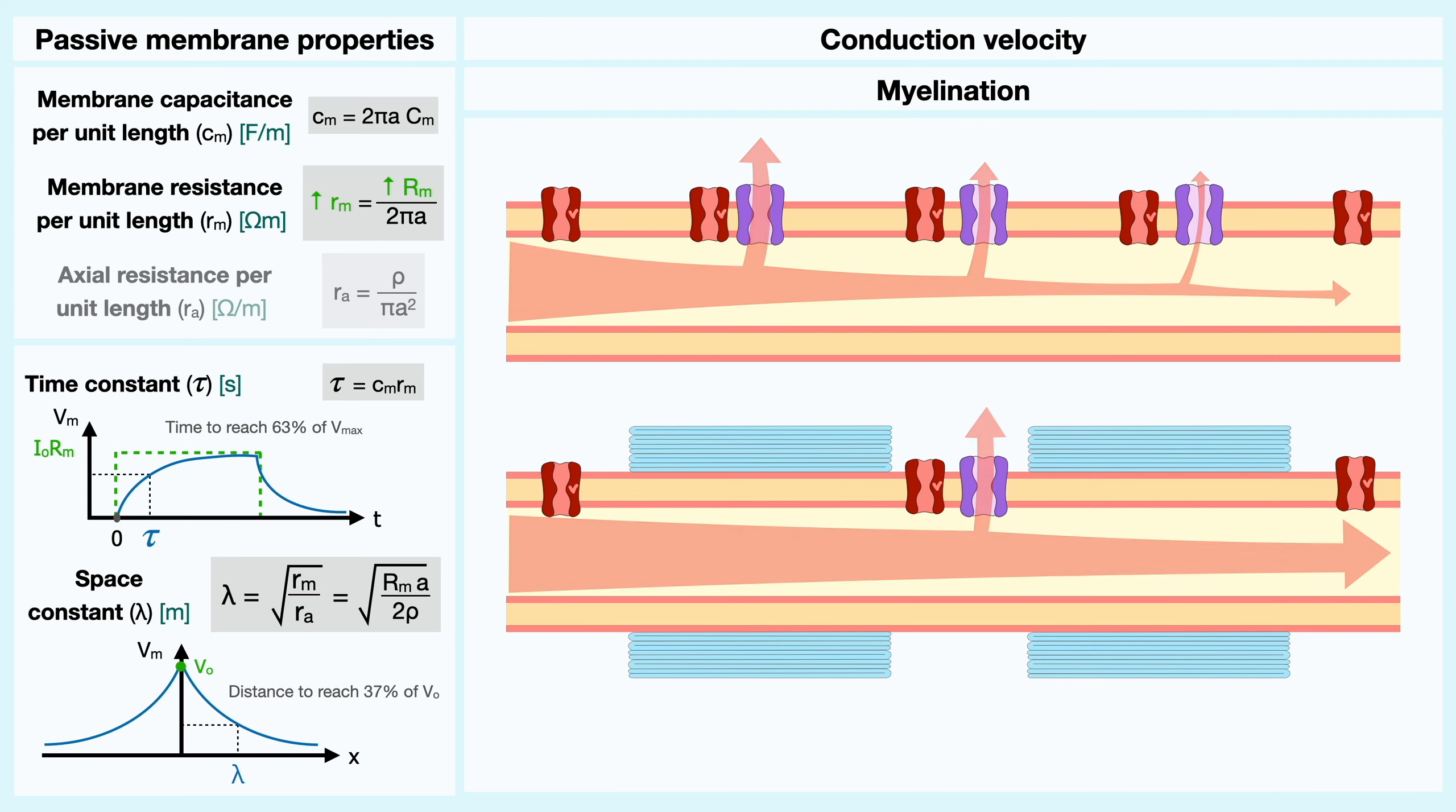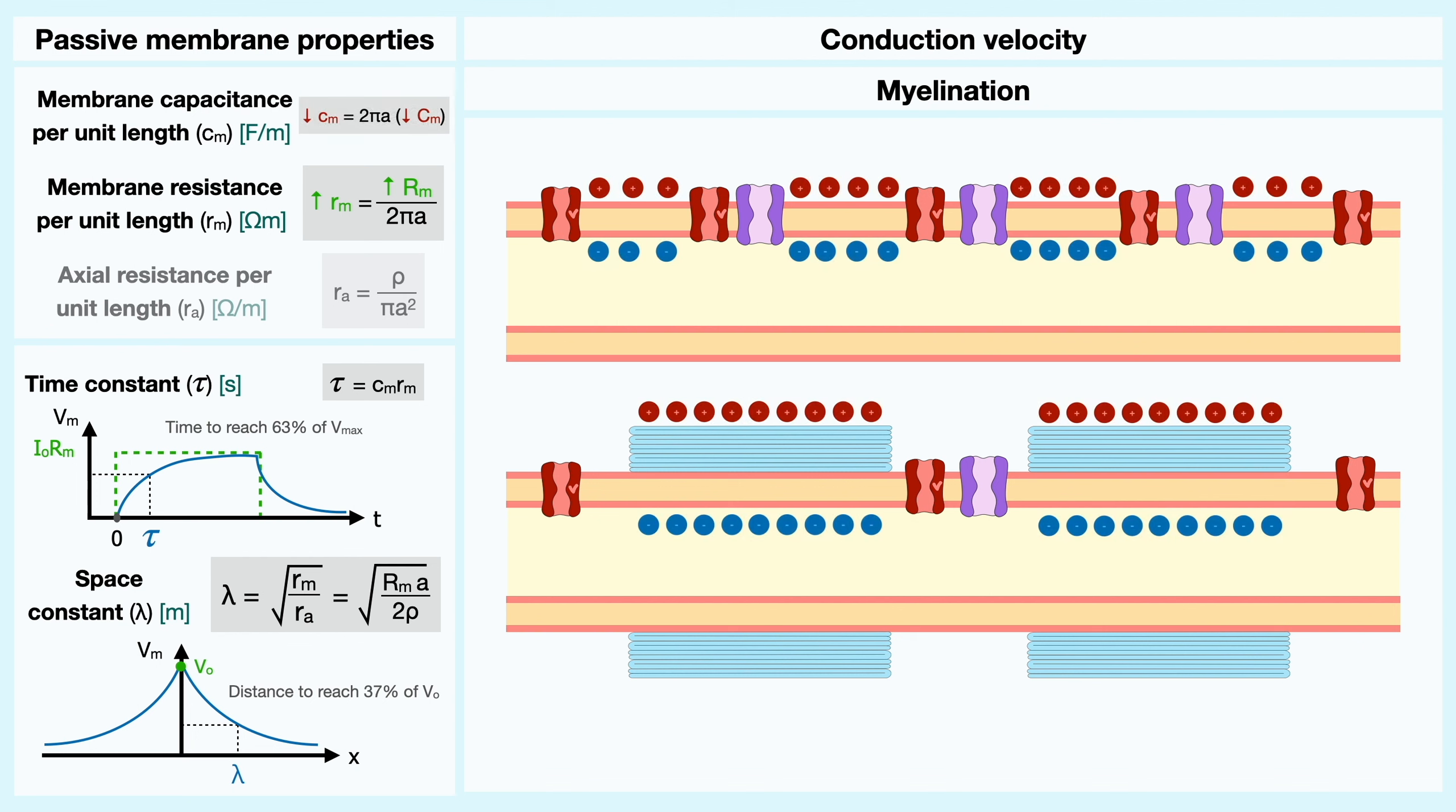Another consequence of myelin comes from the additional thickness it provides to the membrane, which considerably decreases the capacitance by separating the charge at a longer distance and reducing the electric field between the opposing charges.